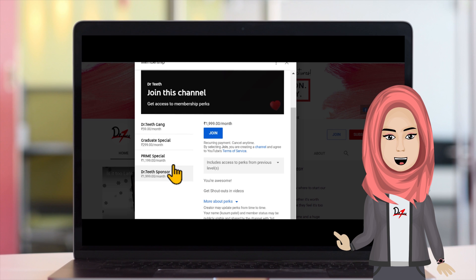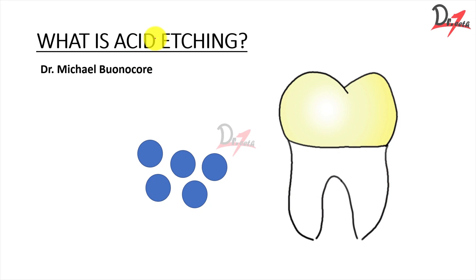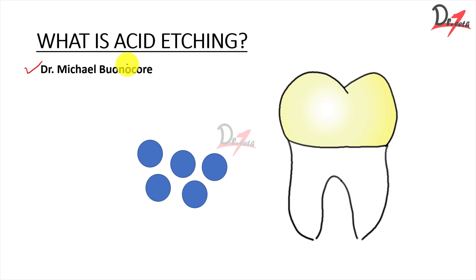Let's get started with the video. The first question is: what is acid etching and why do we need to do this? Dr. Michael Buonocore — we have heard about him in the composite — he was the one who also pioneered this acid etching technique.